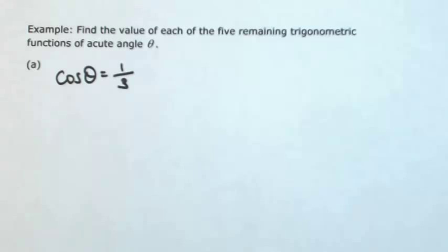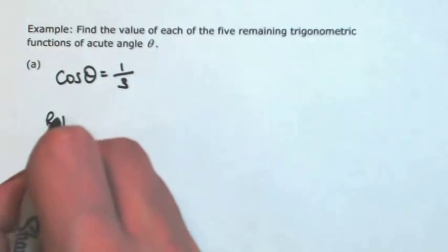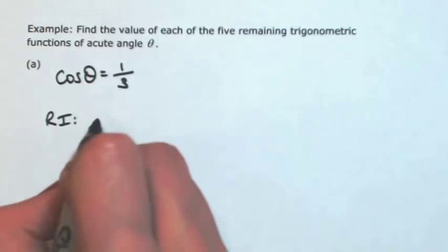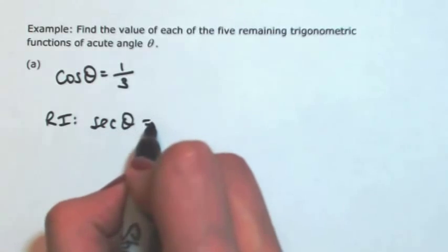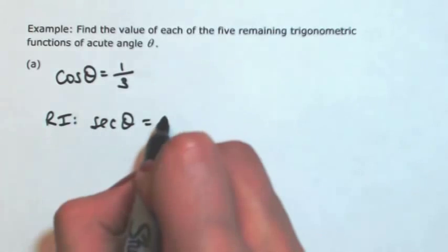Let's say you're given that the cosine of theta is one-third. The first thing I'm going to do is use any identities I can to find the other five. Since I know cosine, I immediately know its reciprocal. So using the reciprocal identity, secant of theta is going to be the reciprocal of cosine, so that's three.